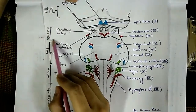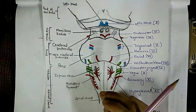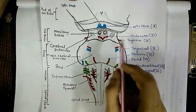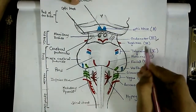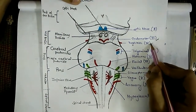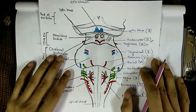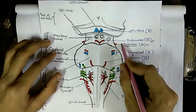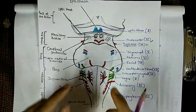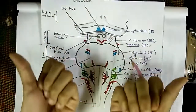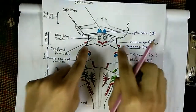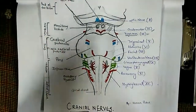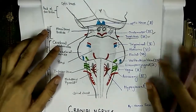From the midbrain, two cranial nerves originate: the third cranial nerve, the oculomotor, and the fourth cranial nerve, the trochlear. An important point to remember is that the trochlear nerve is the only cranial nerve that originates from the posterior aspect of the midbrain.